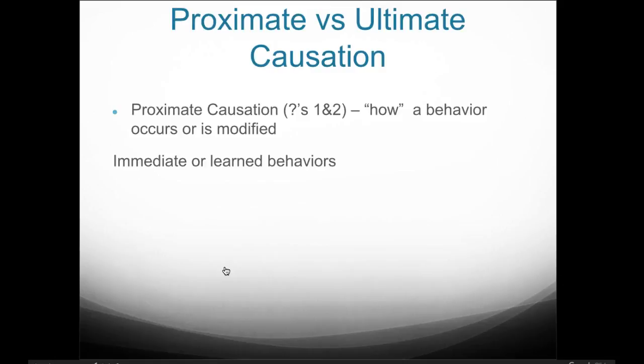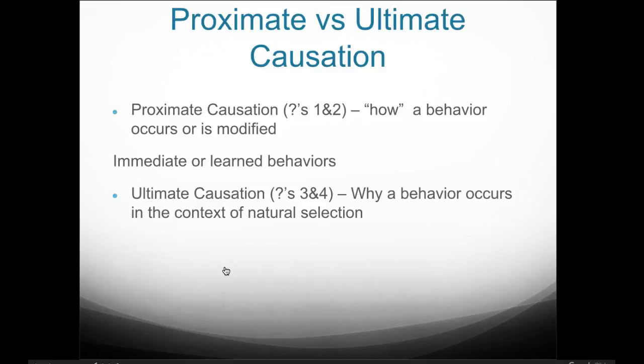Is it an immediate or a learned behavior? Learning happens because of behaviors or things we do through our experiences. So was that behavior immediate or learned — something brought about over time through experience? Then there's ultimate causation. Ultimate causation questions are like those in questions three and four: why a behavior occurs in the context of natural selection. Here we think about whether it is an ingrained behavior or a subconscious one.